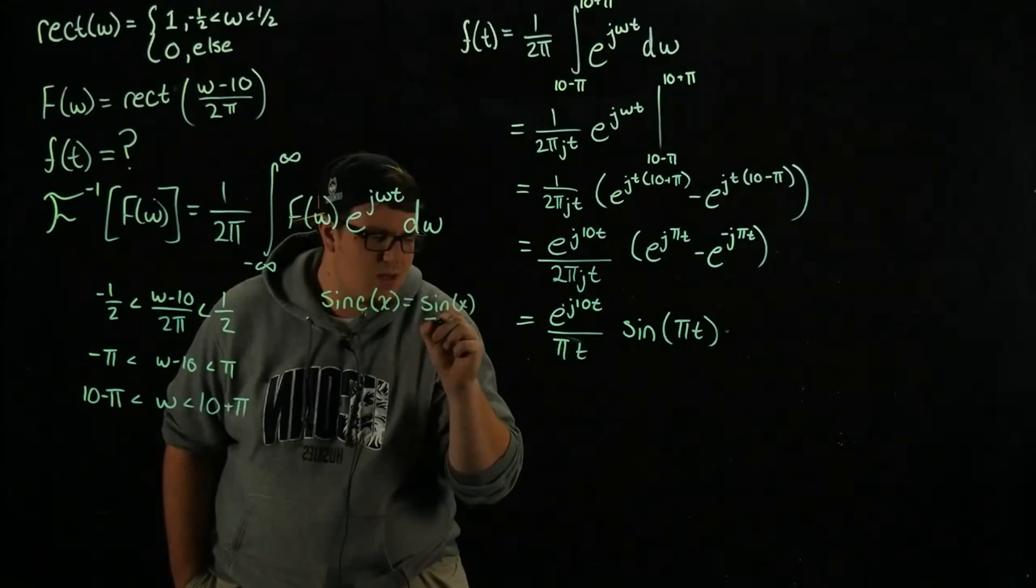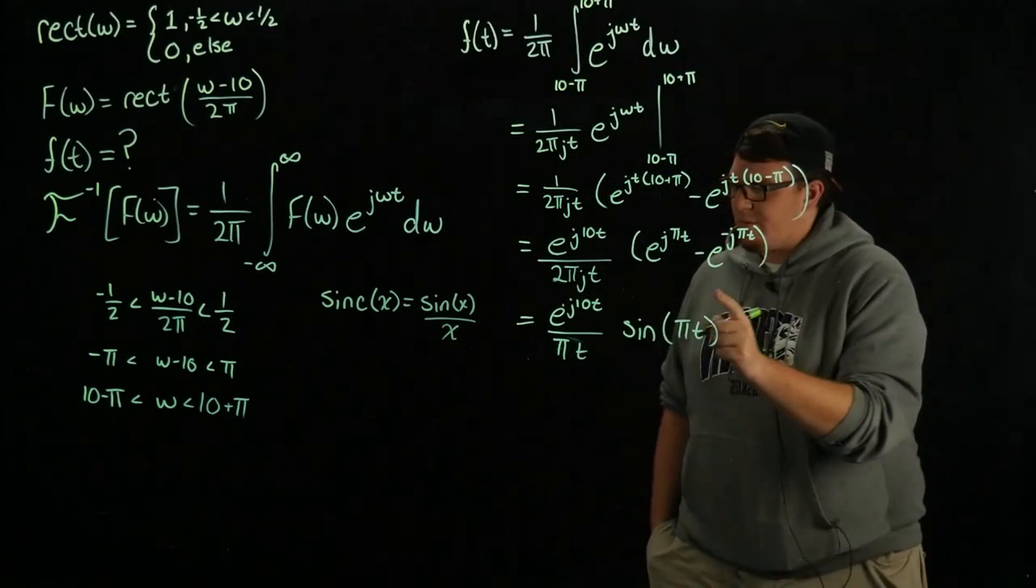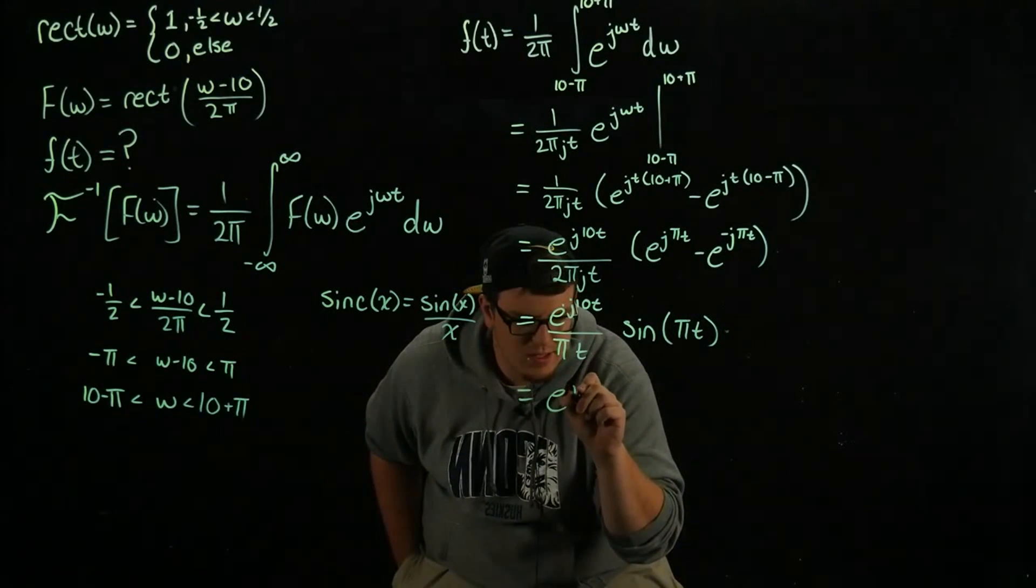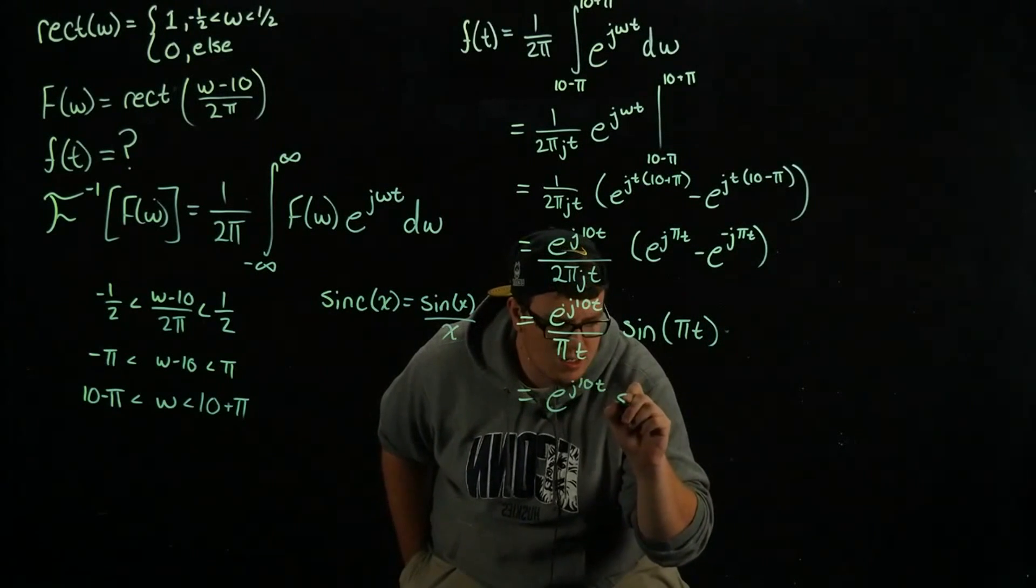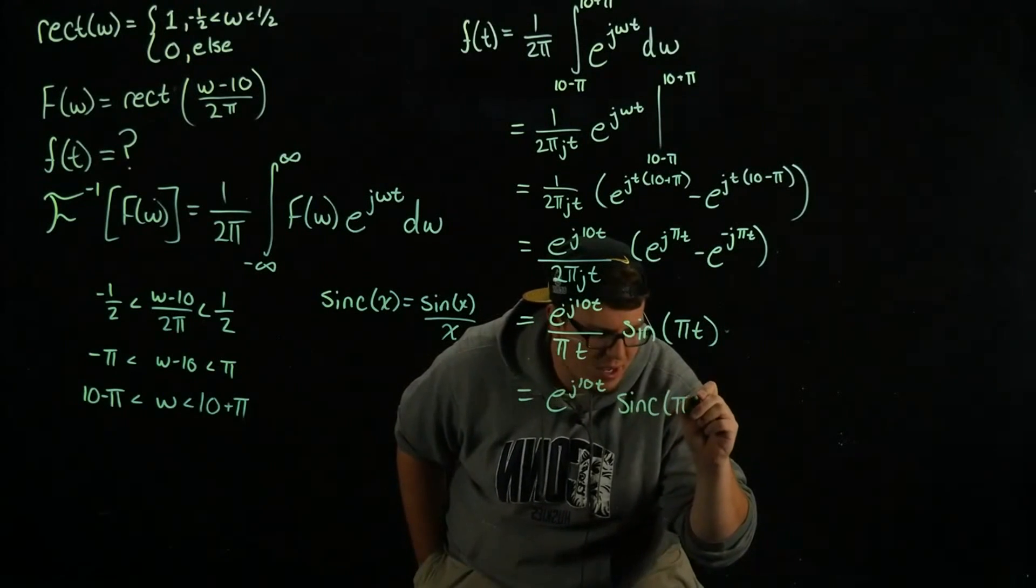It's defined as the sine of x divided by x. So we can replace this here and we end up with e to the j 10 t sinc of pi t.